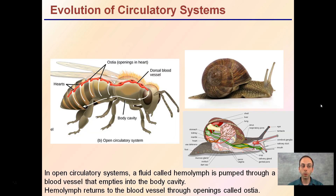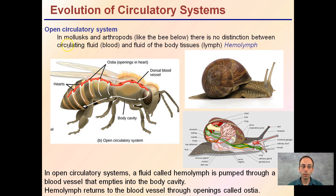Building from that, we have organisms that have developed what we call an open circulatory system. In this system there is no distinction between circulating fluid such as blood and the fluid of body tissue, which is lymph. The mixture is specifically referred to as hemolymph.